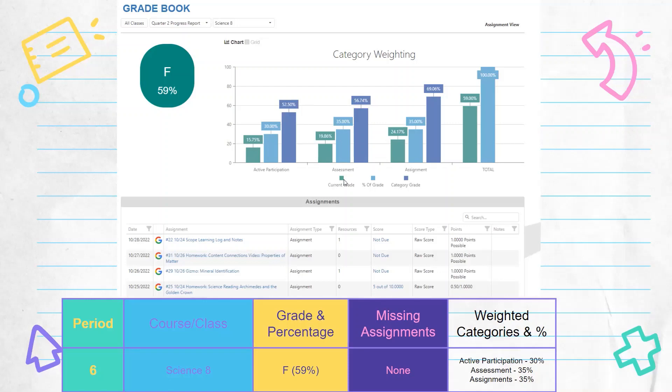For the assessments, which assessments are like tests, 35% of the grade comes from that category. And as you see, the student only has about 19% of those points in, which gives the student a 56% for assessments. And then finally assignments at 35%. A little more points here in the assignment, 24% of those points are turned in. So the student has a 69, almost a C in that category.